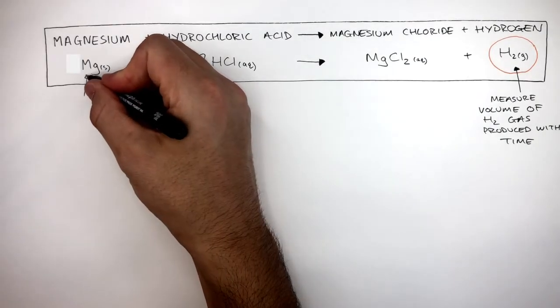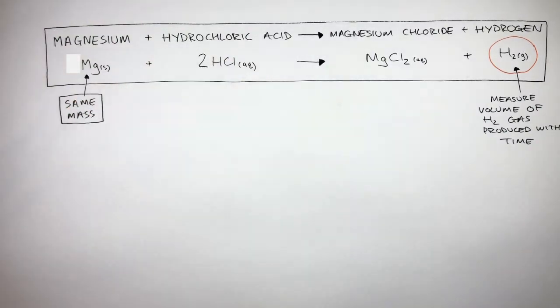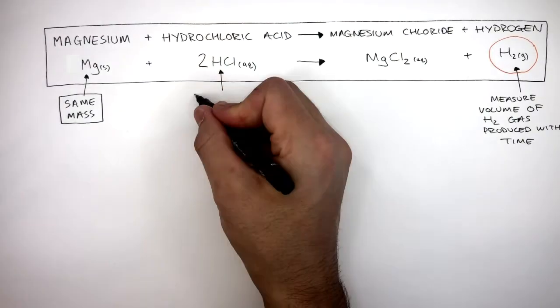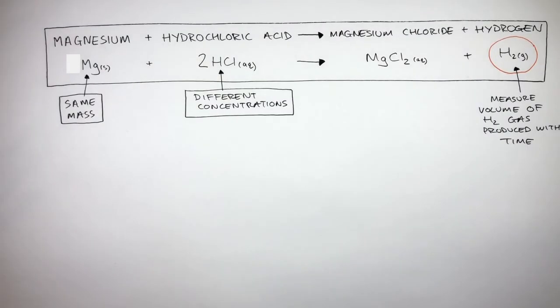In this experiment we're going to use the same mass of magnesium but different concentrations of hydrochloric acid. So we carry out the experiment reacting magnesium with different concentrations of hydrochloric acid. We measure the volume of gas produced at regular intervals.